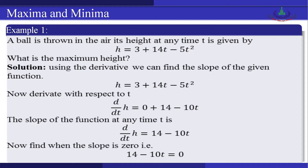Now we look at an example. A ball is thrown in the air. Its height at any time t is given by h(t) = 3 + 14t − 5t². We want to calculate the maximum height of the ball. Using the derivative we find the slope: dh/dt = 0 + 14 − 10t. The slope of the function at any time t is given by dh/dt = 14 − 10t.